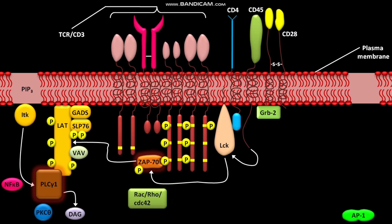DAG binds to PKC-θ, which leads to the degradation of the inhibitors of NF-KB. As a result, inactive NF-KB becomes active. The active NF-KB then moves toward the nucleus.